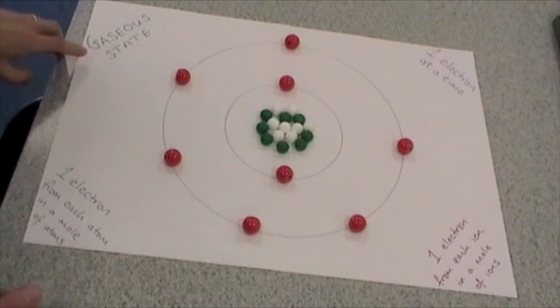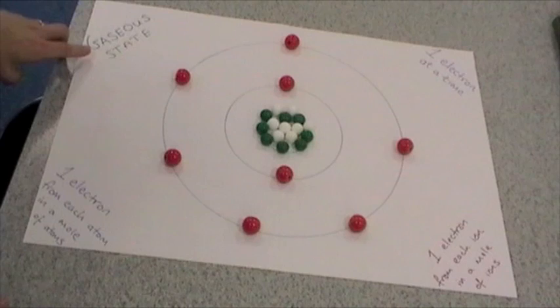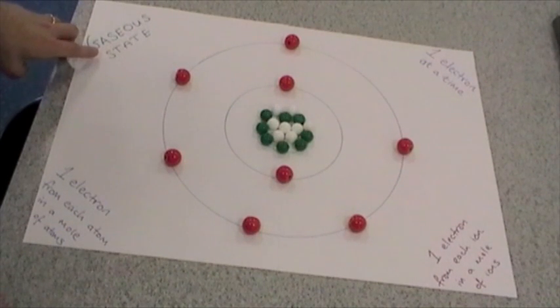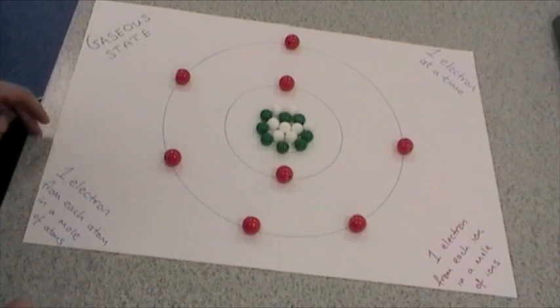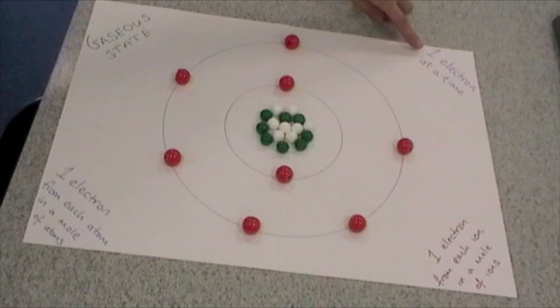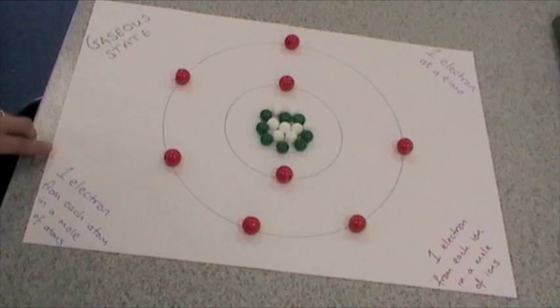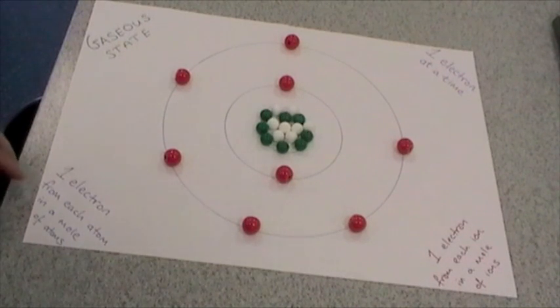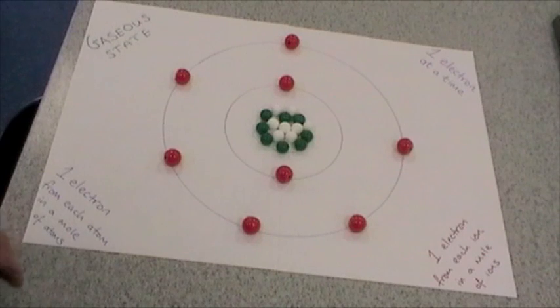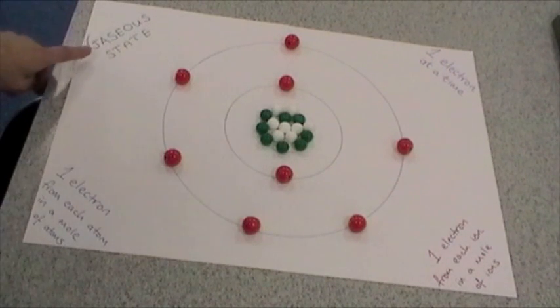Just point out a couple of things around the side here that you can keep an eye on. This process is always measured in the gaseous state, so everything has to be a gas. One electron at a time is removed, so you would never remove 2 or 3 at once, it's always 1 at a time. One electron is removed from each atom in a mole of atoms, so you'd never have an isolated atom totally on its own. So the whole process deals with the removal of 1 electron from each atom in a mole of atoms in the gas state.